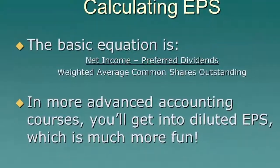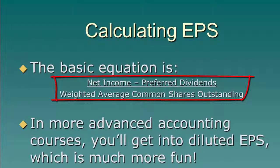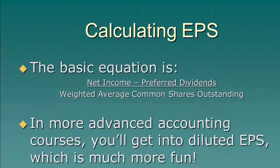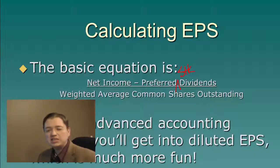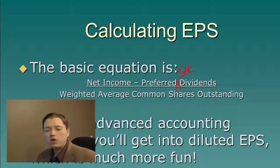The basic equation is: net income minus preferred stock dividends, divided by the weighted average common shares outstanding. Preferred stock dividends are the dividends paid to preferred stockholders. Preferred stock is a class of stock with no voting rights — instead it has preferential payment, meaning preferred stockholders get their dividends first and get their money first in the case of liquidation. Because they don't have voting rights, FASB doesn't consider them owners, so we remove them and calculate earnings per share only for the voting owners.